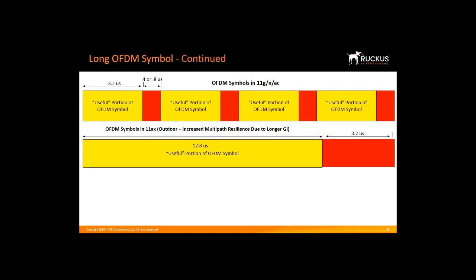The solution is shown in the bottom graph: we quadruple the duration of the guard interval. Instead of 0.8 microseconds, it is now 3.2 microseconds, which means it can tolerate reflections coming from a much larger distance. The yellow data portion has been increased four-fold to 12.8 microseconds, which gives a lot of outdoor multipath tolerance and keeps the overhead the same. This increase in size is called the long OFDM symbol, and as a result it's better for outdoor deployments — you can now mount your APs at a much taller height to cover a wider area.